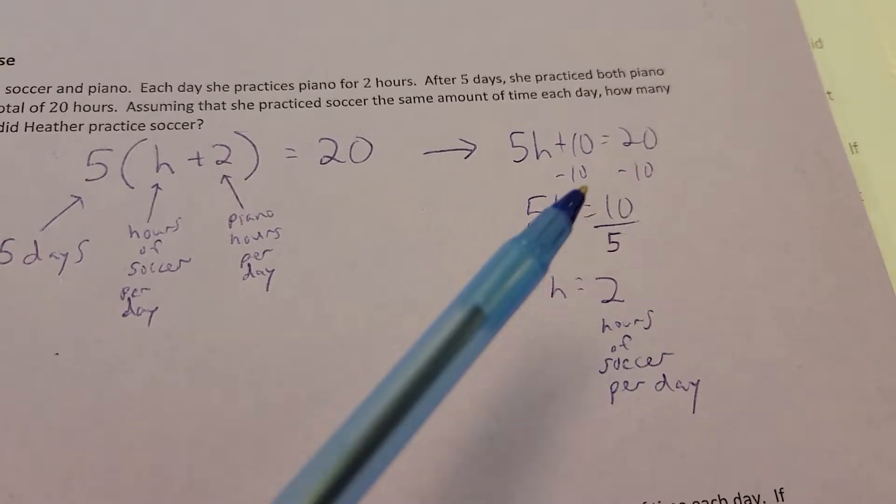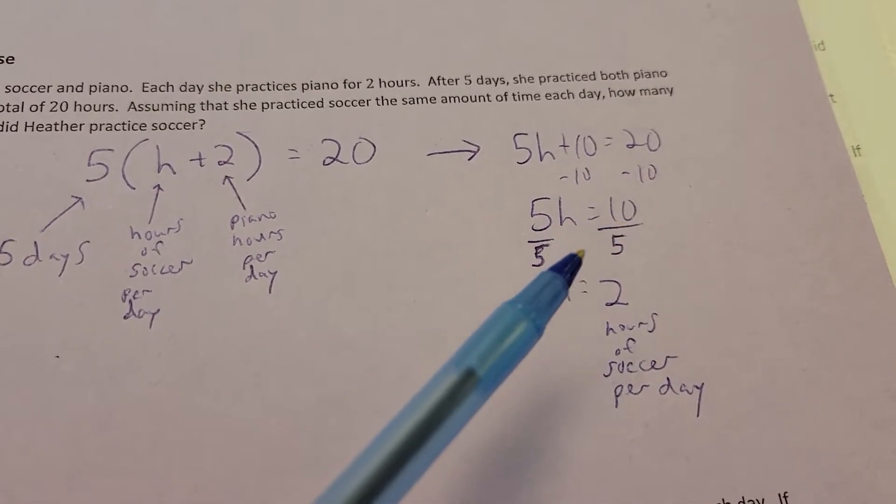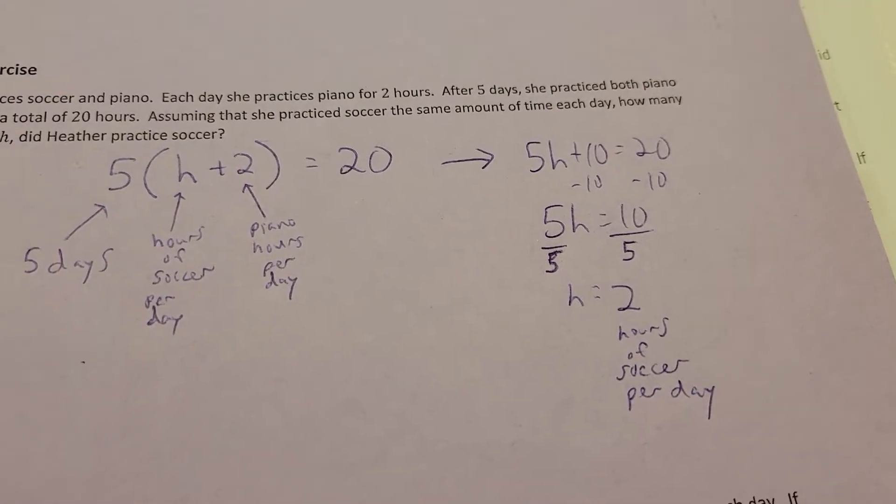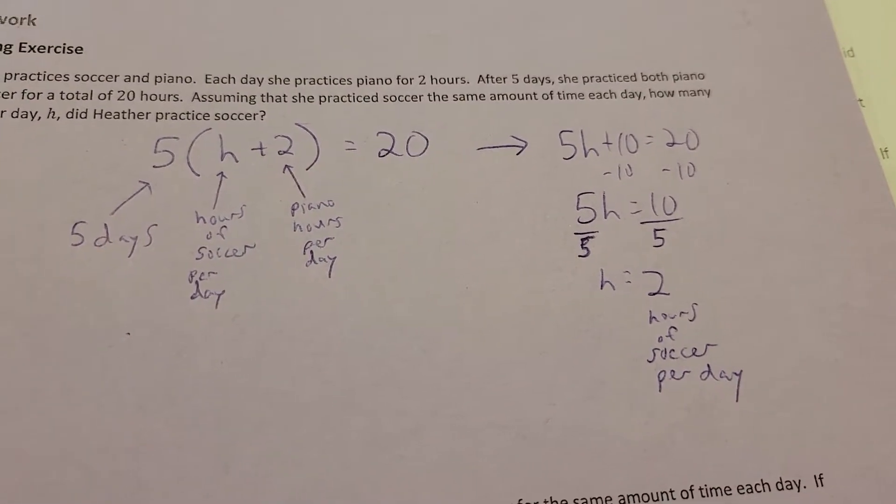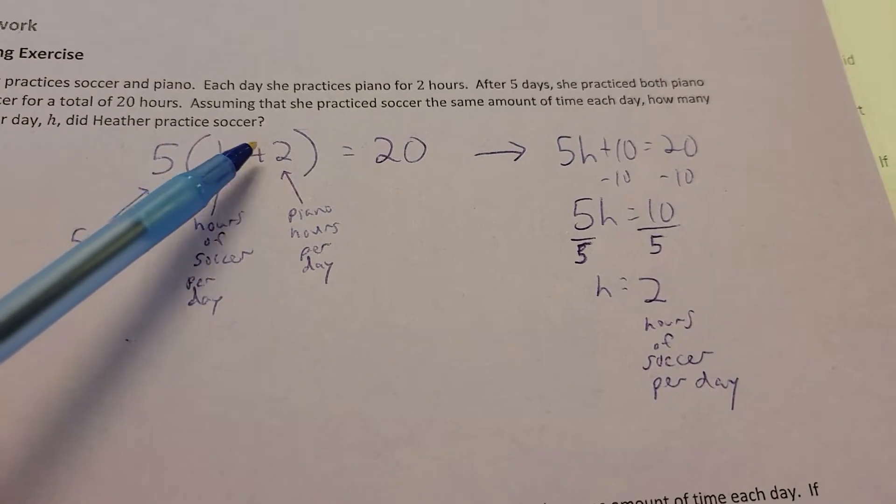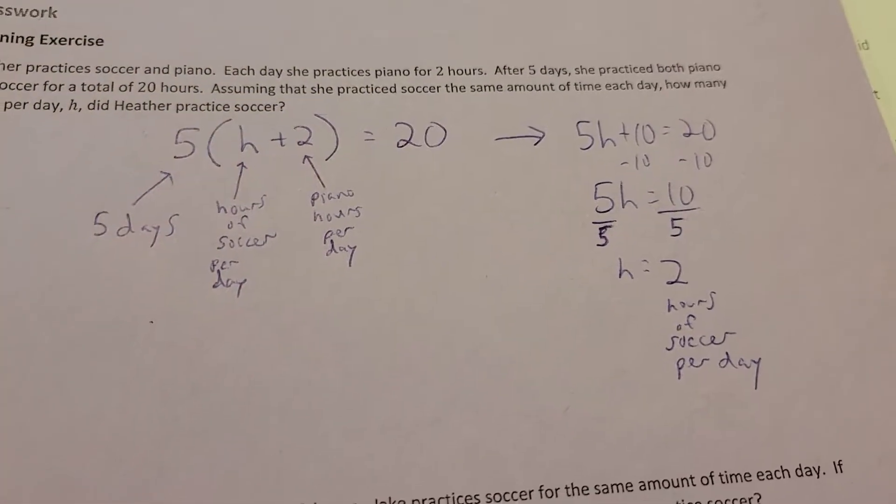That's 10 hours of the piano throughout the whole week. So, we get rid of the piano hours, take that away. So, we're going to have 5 times H equals 10, and divide each side by 5, H equals 2. So, she gets two hours of soccer per day. And you can always double-check. Two hours of soccer, two hours of piano, that's a total of 4 times 5, does give you 20.